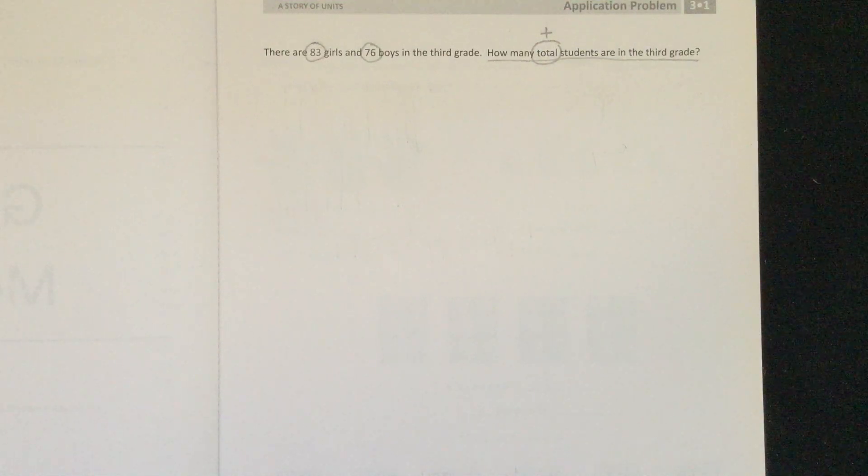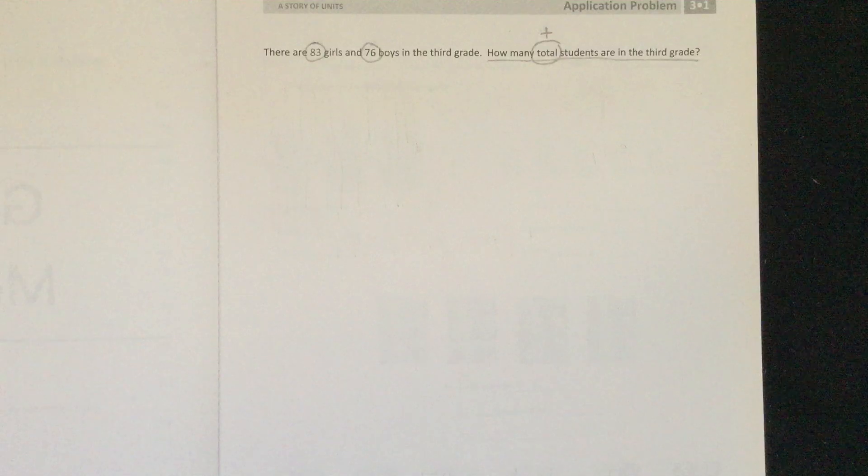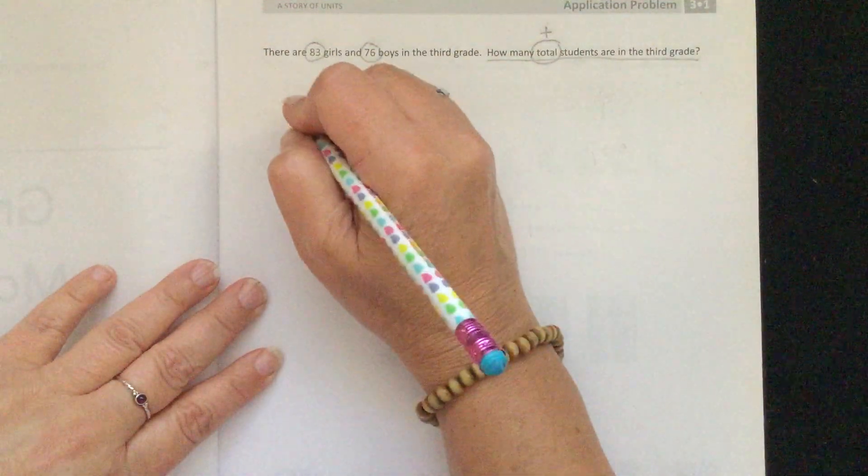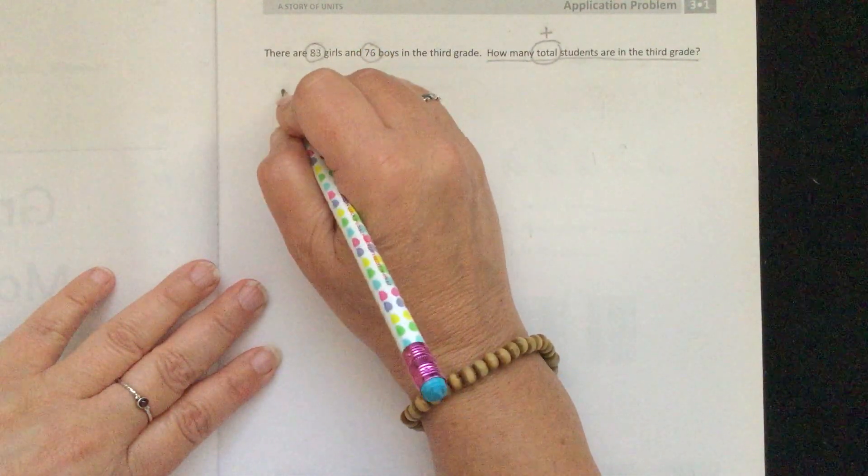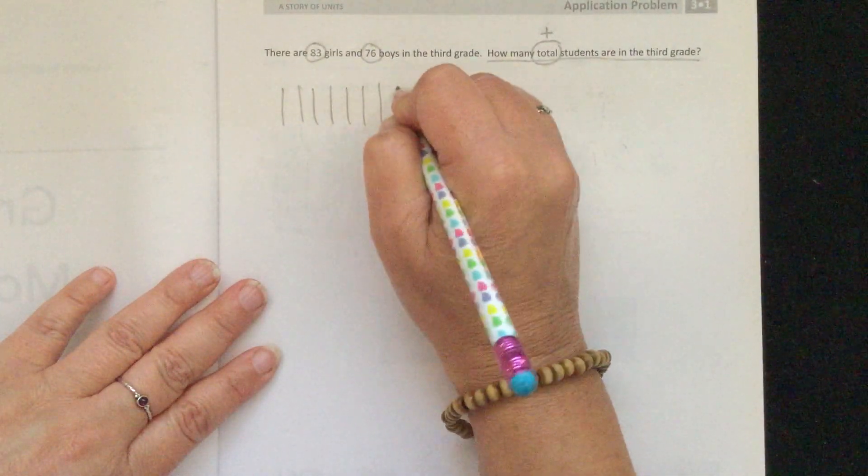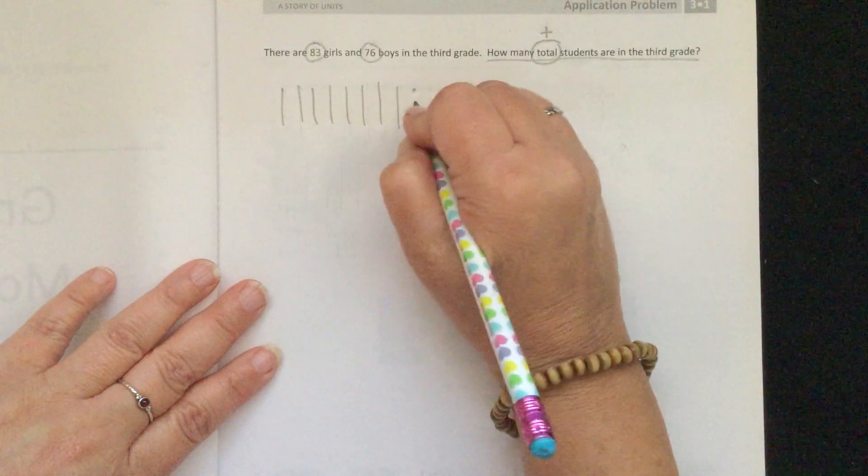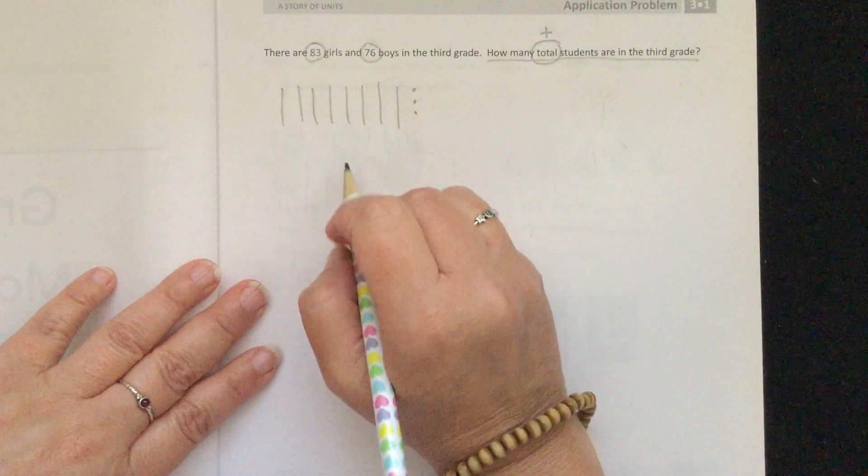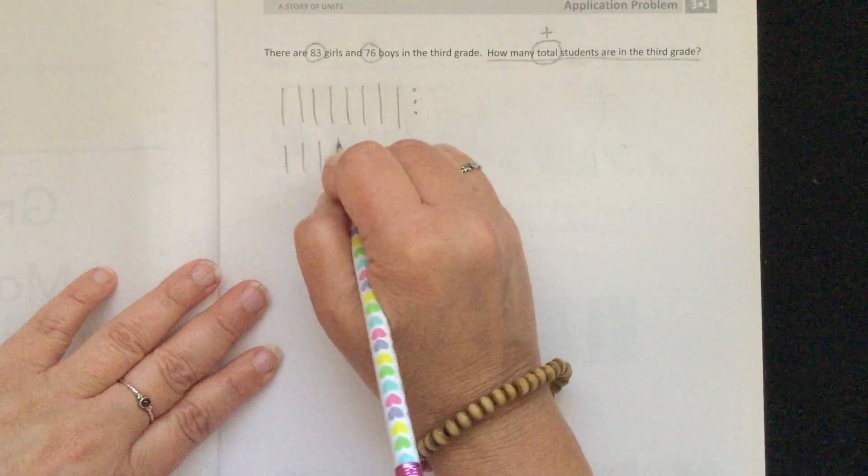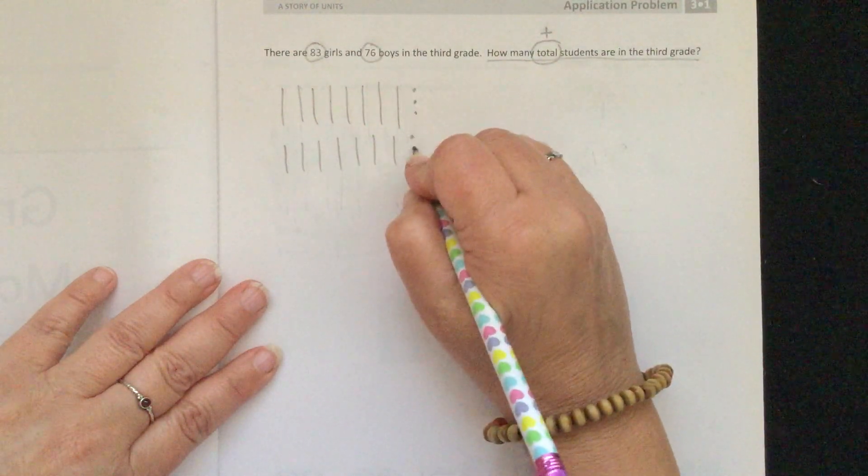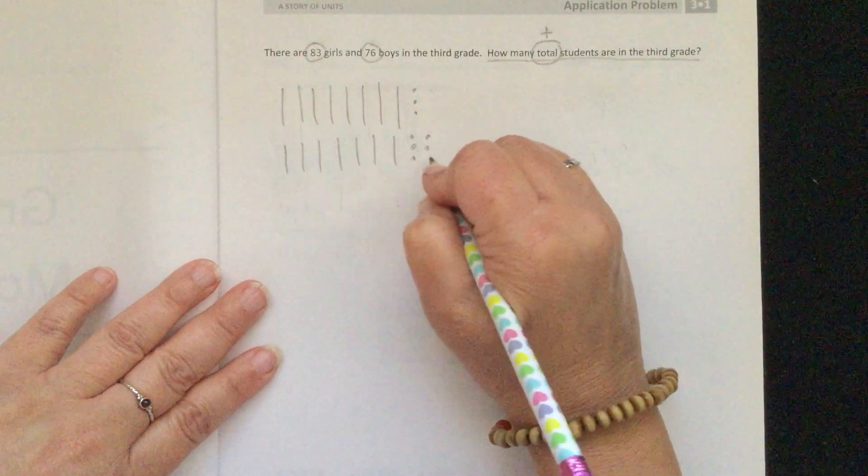Now we have to draw this problem out. We have 83, so I'm going to draw tens and ones. I see the 8 in the tens place: 1, 2, 3, 4, 5, 6, 7, 8. And 3 in the ones place: 1, 2, 3. And then I have 7 in the tens place: 1, 2, 3, 4, 5, 6, 7. And 6 in the ones place: 1, 2, 3, 4, 5, 6.